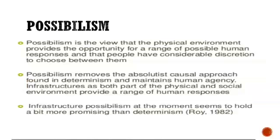So first, a small view — what is possibilism? In possibilism, it is not said that the environment controls us in every way. Rather, the physical environment provides opportunities for a range of possible human responses. People have considerably freedom to choose between them. Possibilism removes the absolutist approach from determinism and maintains human agency.